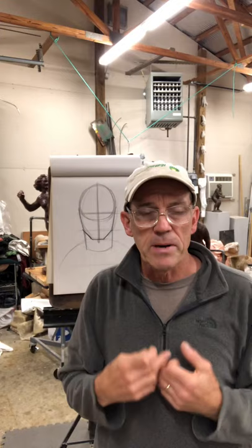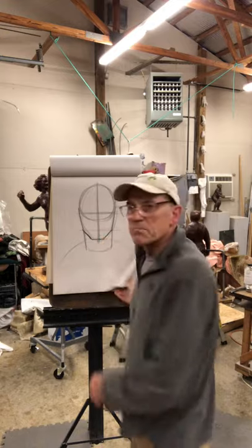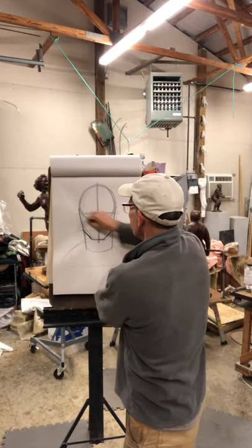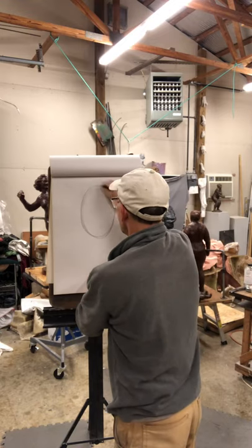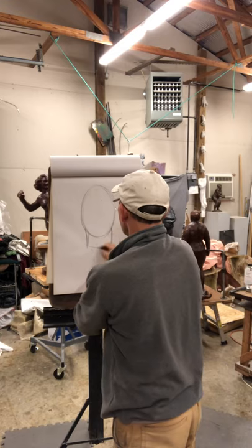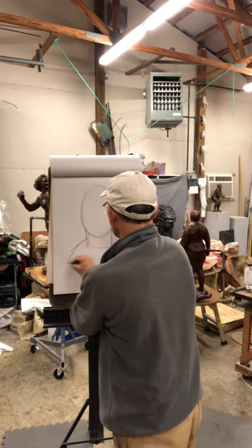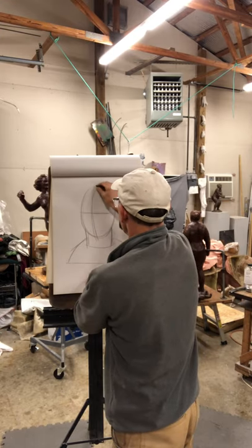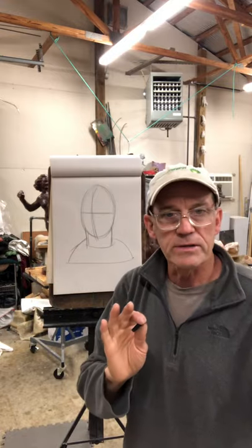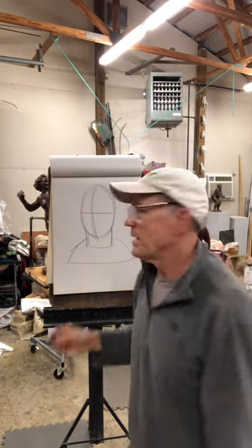A subtlety here is that the head from the front is a different proportion than the head from the side. The head from the front fits into about a two-by-three rectangle; from the side it approaches a square more, as our head gets longer as we go to the profile. So when you use this ball and plane idea — I've drawn it as a circle — but if the head is turned relative to me, like this, the person's head is turned.